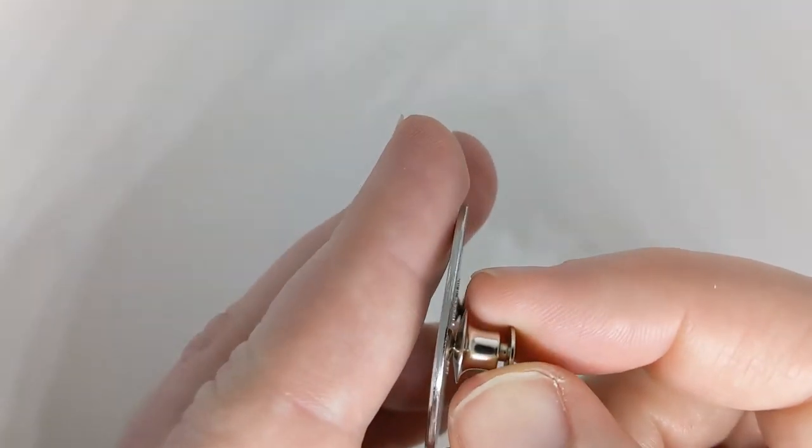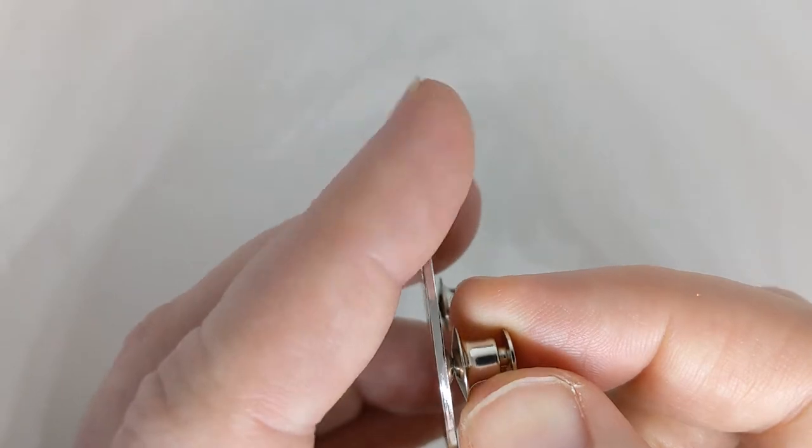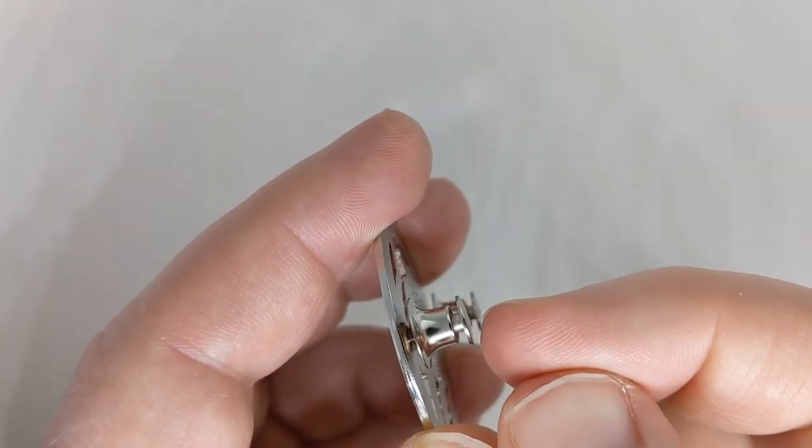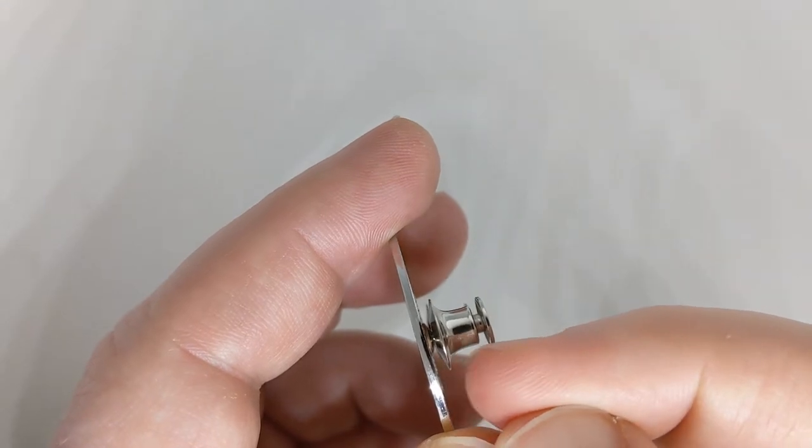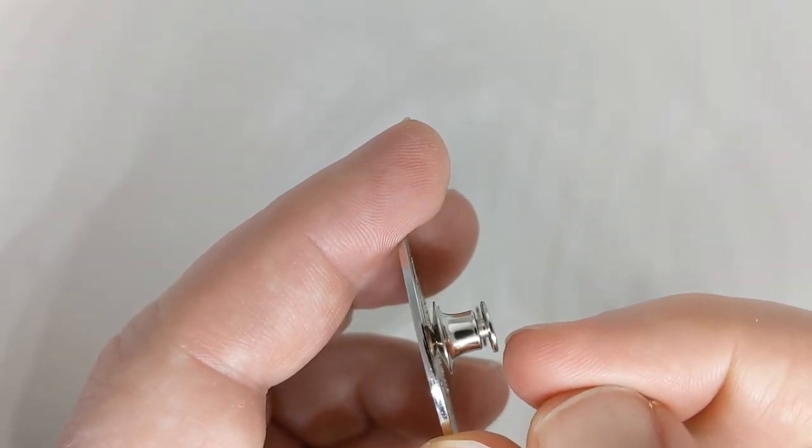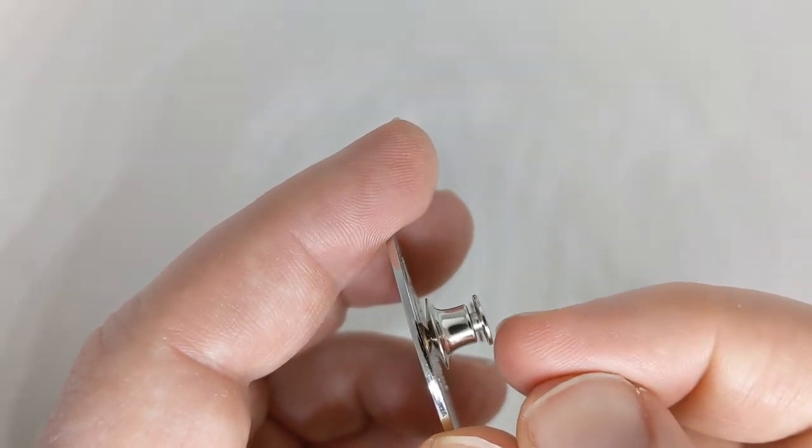And that leaves you with nothing to pull on to get it off. So, I'm gonna show you how to get one of these spring-locking pinbacks off when this top disc comes off. You're just gonna need a pair of needle-nose pliers.